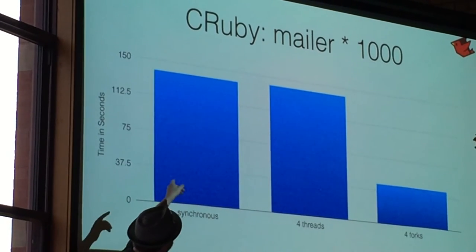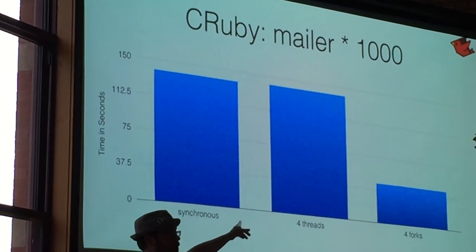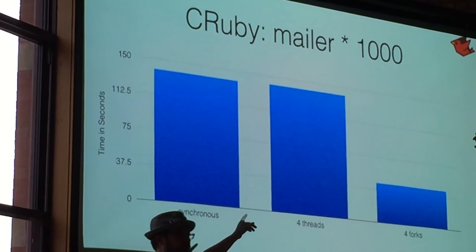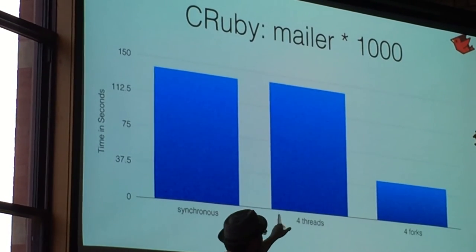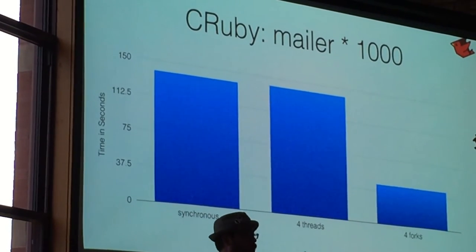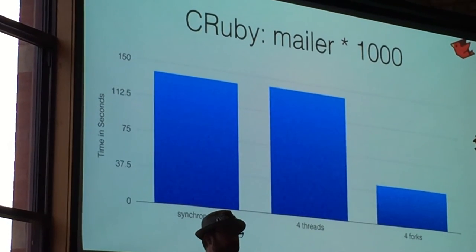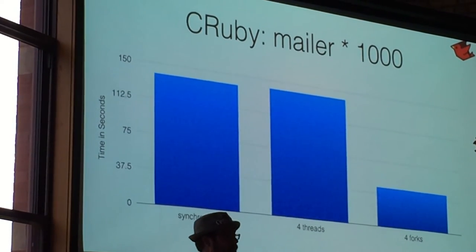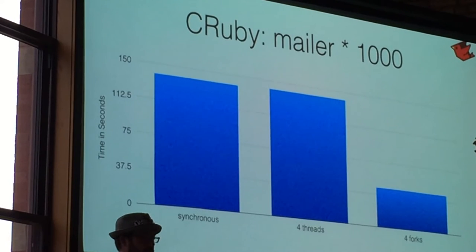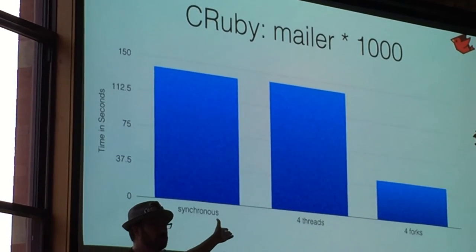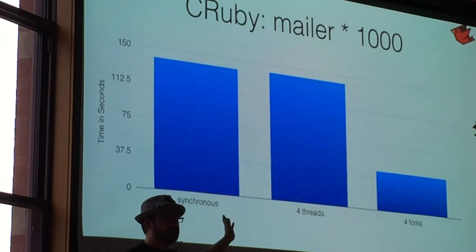The synchronous, the single-threaded version, and the four-threaded version unsurprisingly are about the same performance. And actually if you look carefully, the four-threaded version is slightly slower. When you spin up that first thread on CRuby, it starts doing more inter-thread checks. There's a little bit more safeguards involved in the runtime level. So threads can actually have a small decrease in performance for that first one. And then you get none of the parallel capabilities out.